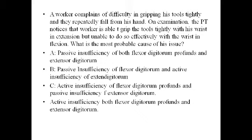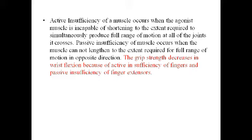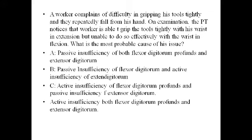Option D: active insufficiency of both flexor digitorum profundus and extensor digitorum. The grip strength decreases in wrist flexion because of active insufficiency of the finger flexors and passive insufficiency of the finger extensor digitorum. Therefore, Option C is the correct answer: active insufficiency of flexor digitorum profundus and passive insufficiency of extensor digitorum simultaneously.